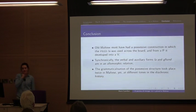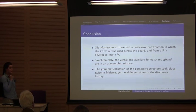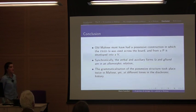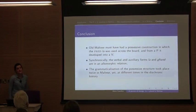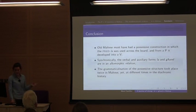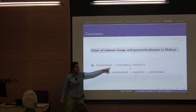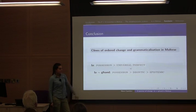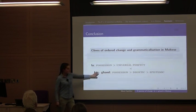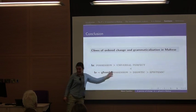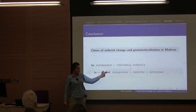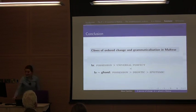To conclude: old Maltese must have had a possessive construction in which the predicate 'la' was used across the board, and from a preposition it had developed into a verb already. Synchronically there are contexts where the verbal and auxiliary forms 'la' and 'and' are actually in an allomorphic relationship. Another beautiful illustration is that the grammaticalization of the possessive structure in Maltese has taken place twice but at different times: the initial grammaticalization was when 'la' was the only possessive predicate, out of which you get the universal perfect in Maltese; and secondly, at a later stage, the allomorphic relationship developed further, yielding the modern modal interpretations.